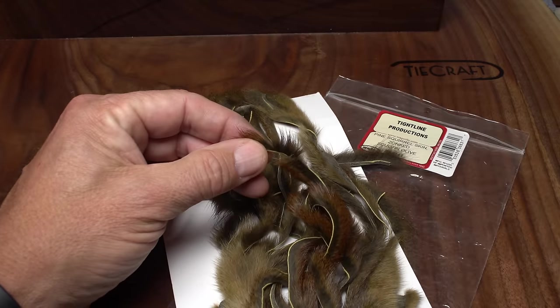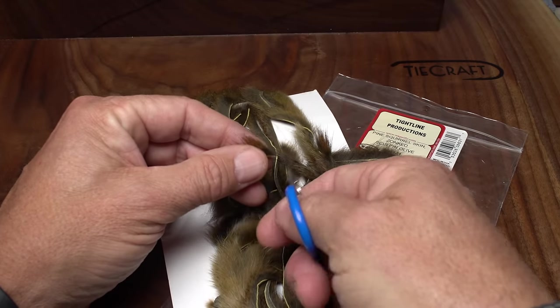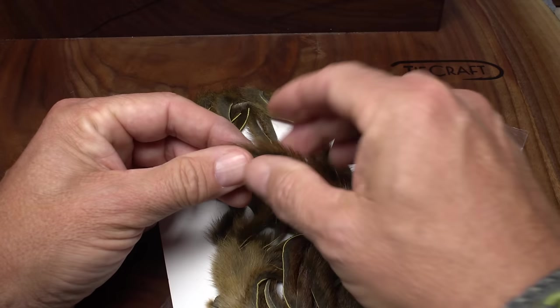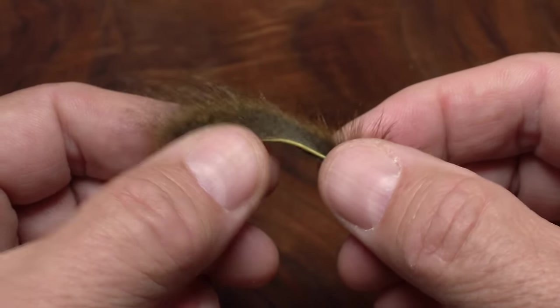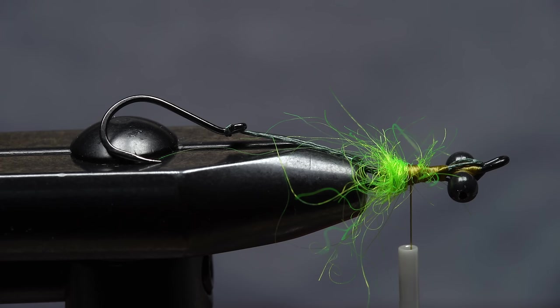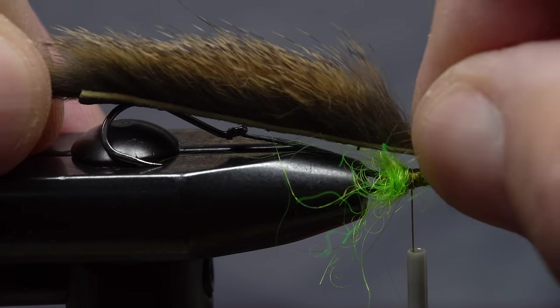Sculpin Olive Zonked Pine Squirrel is the only other material needed for this fly. Snip a 4 inch length free from one of the zonker strips. The thin leather and beautiful dark markings of pine squirrel are hard to beat. With the fur canned rearward, align the back end of the leather with the back edge of the hook.